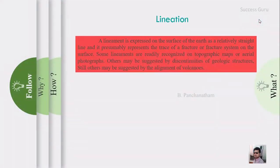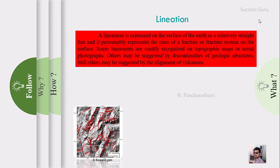Before going into lineation, I want to clarify the term lineament, which is different from lineation. A lineament is expressed on the surface of the earth as a relatively straight line and represents the trace of a fracture or fracture system. Some lineaments are readily recognized on topographic maps or aerial photographs, whereas others may be suggested by discontinuity of geological structures or alignment of volcanoes. You can see here an image that shows a line-like appearance on the topography.